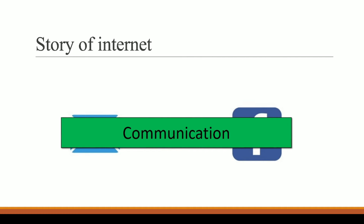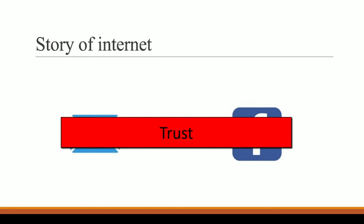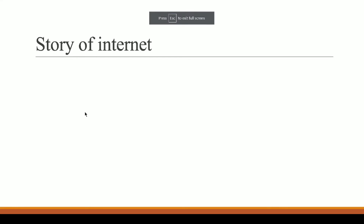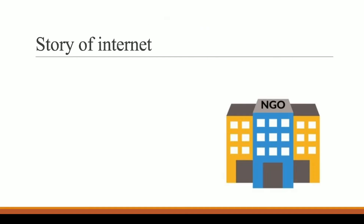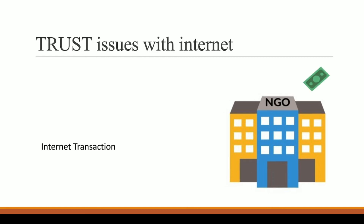Internet has made our communication so easy that we cannot live without it today. But there is something where the internet is lacking. Communication has been made easy, but there is one point where the internet is actually lacking — and that point is trust. We cannot trust the internet. Let me explain with an example: let's say there is an NGO where you want to donate some money, and you do an internet transaction to donate to this NGO.